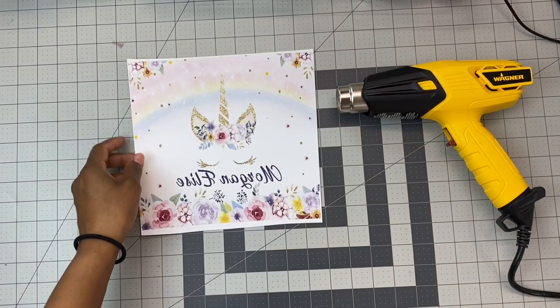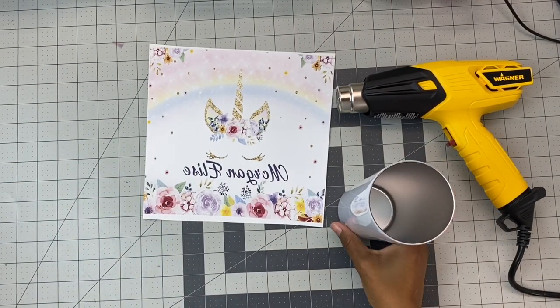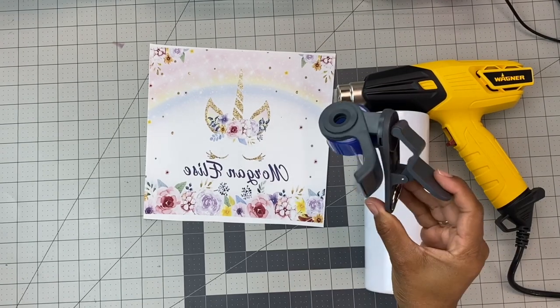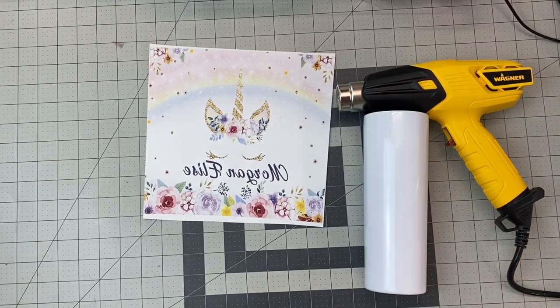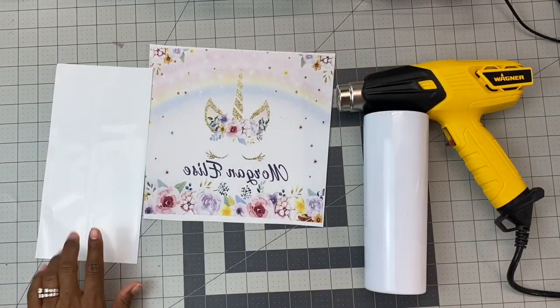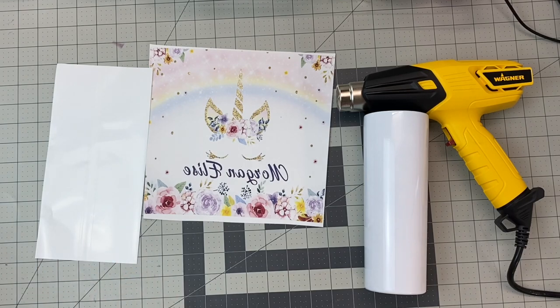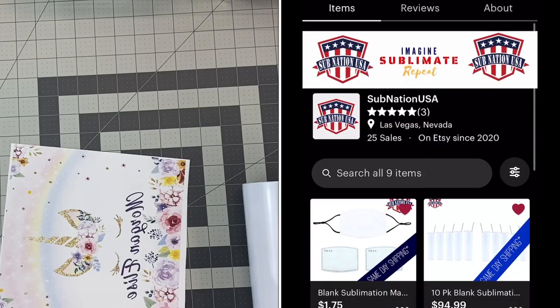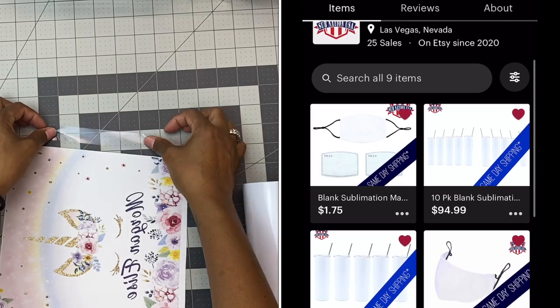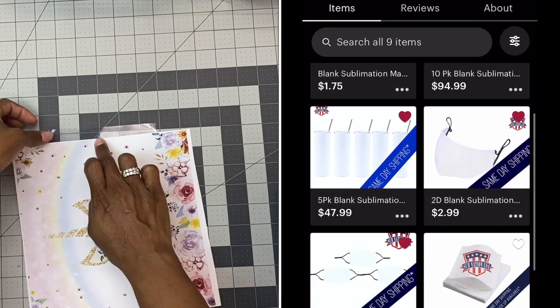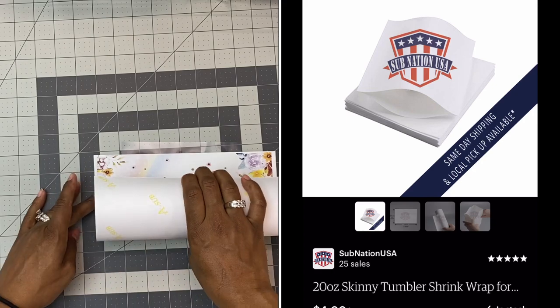Hi guys, welcome back to my channel. Let's jump right in. Today we're going to be using this image, a blank sublimation tumbler, some heat-safe tape, all of which will be linked down below. And this is the shrink wrap we'll be using today. It was sent to me by Subnation USA. That's where I got the tumblers from. This is their Etsy store, so if you want to buy the exact same shrink wrap, there it is.